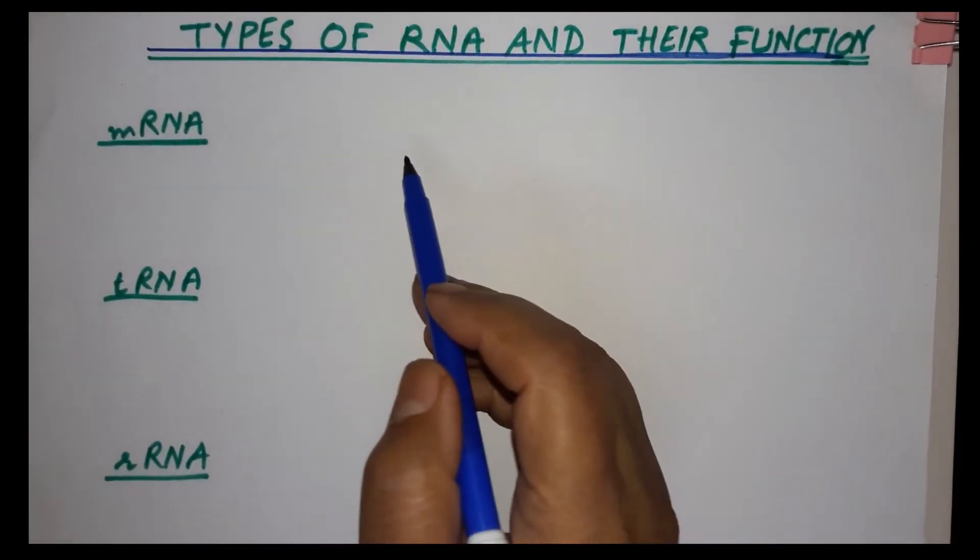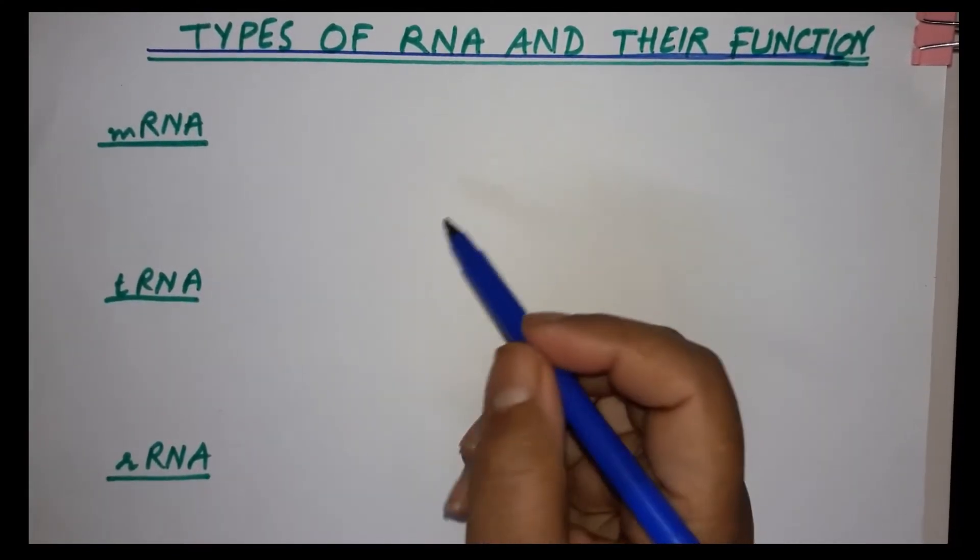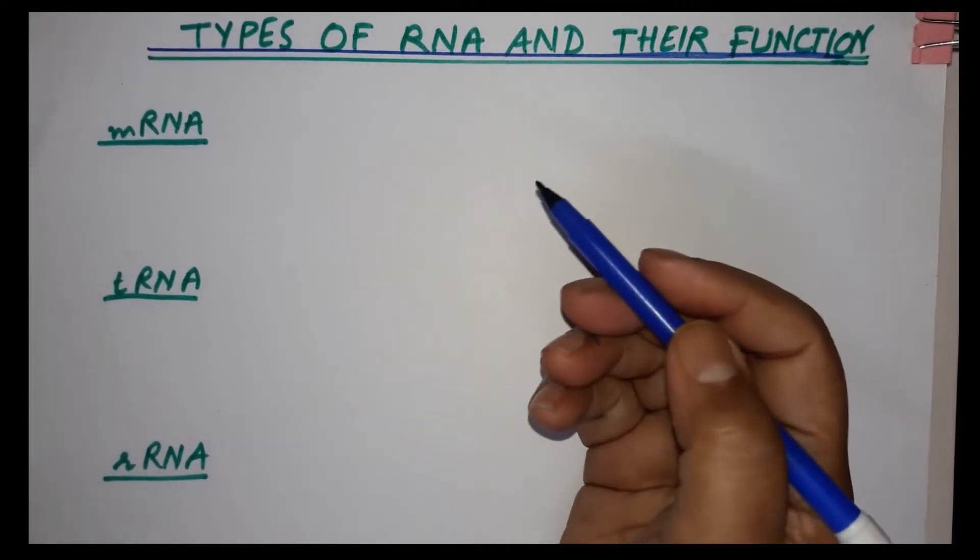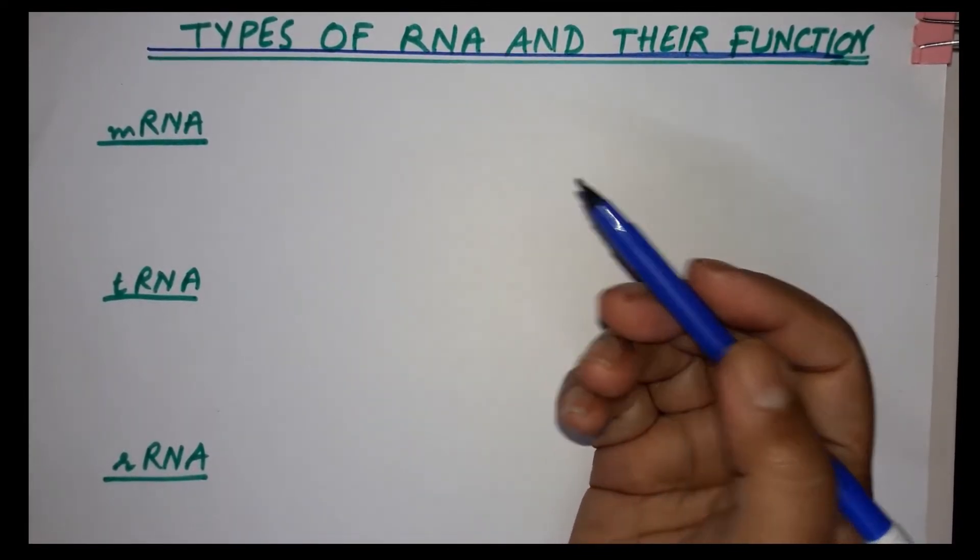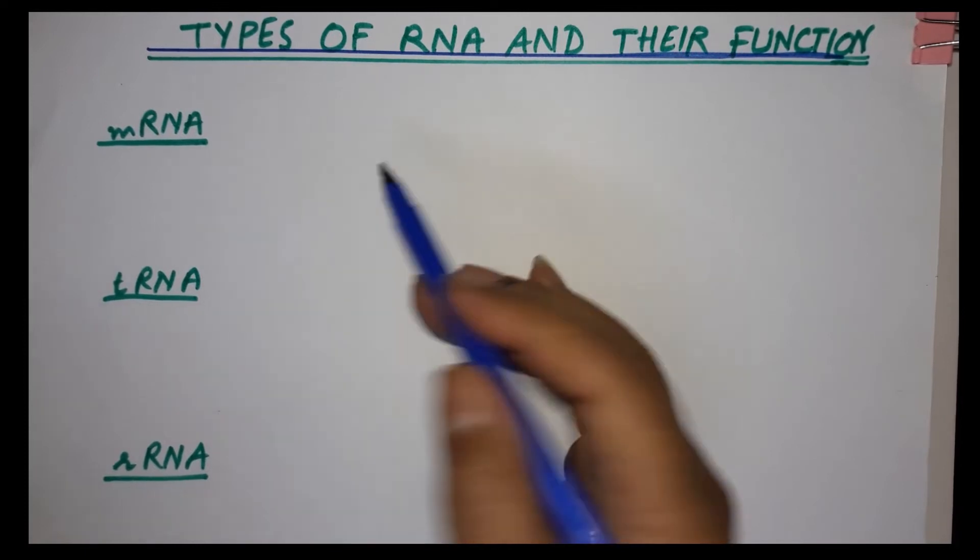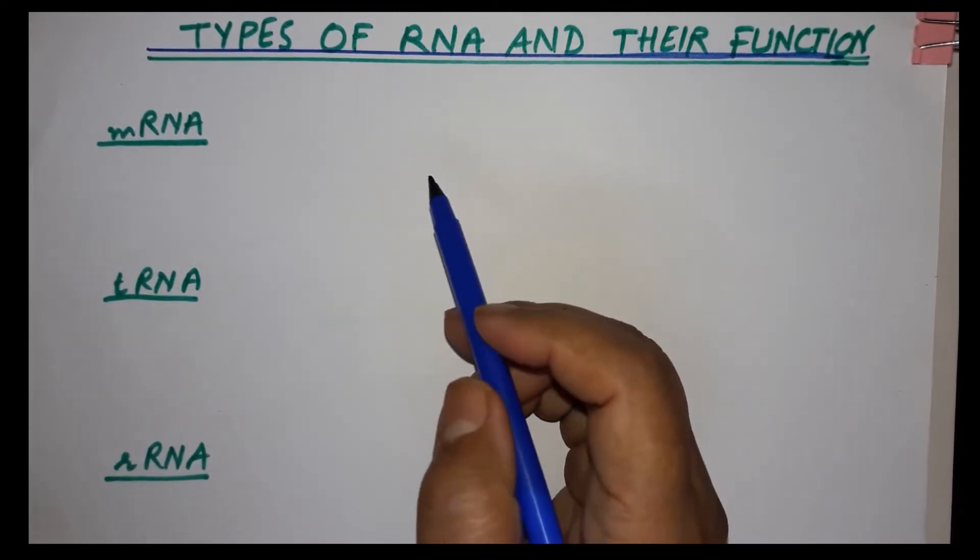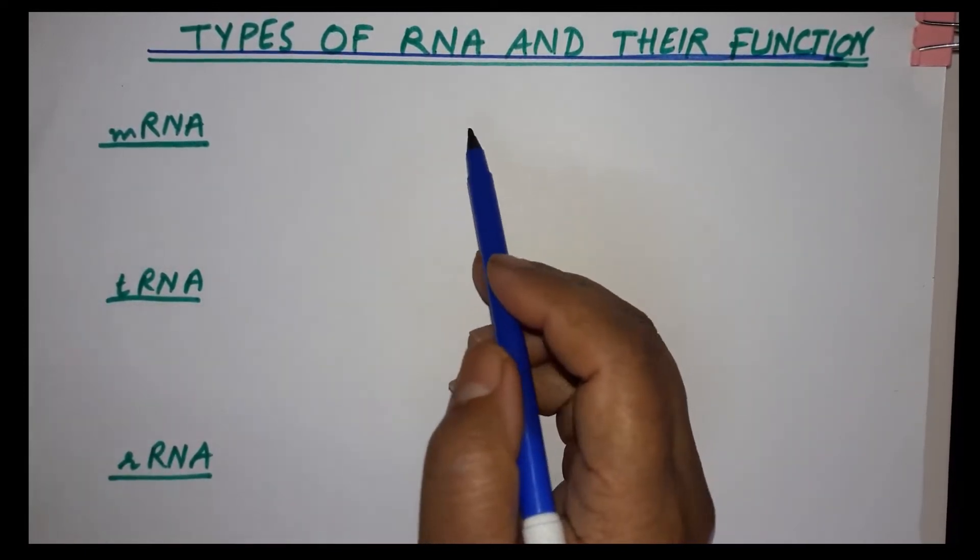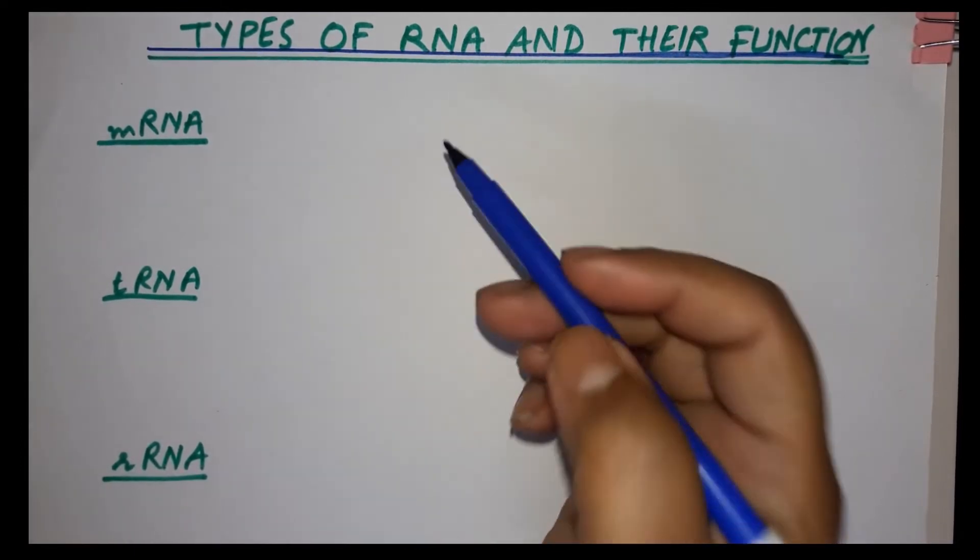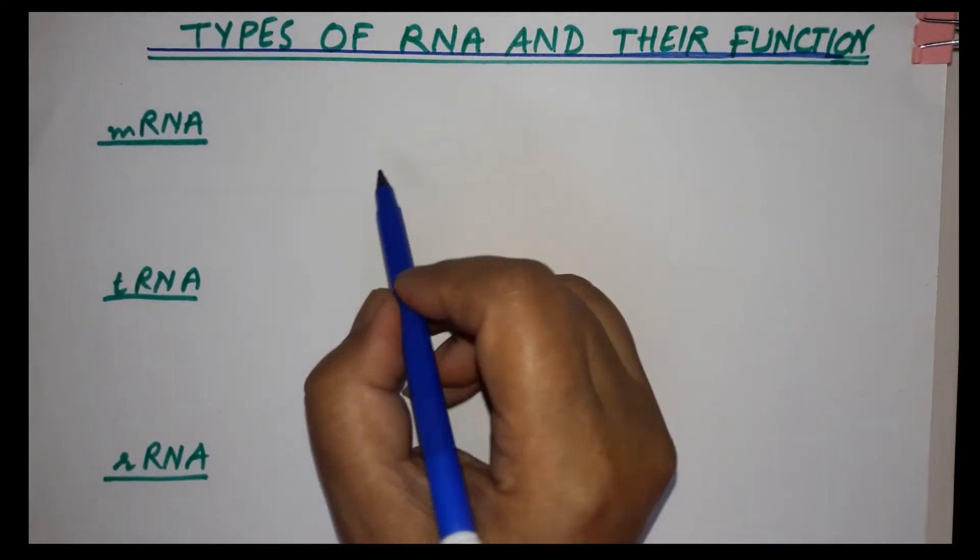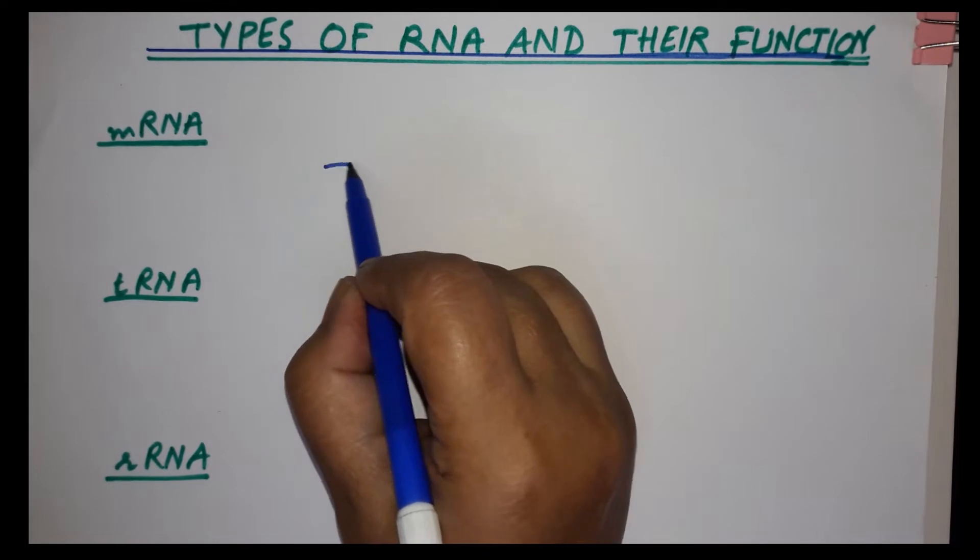So in this video we'll study the types of RNA and their function. DNA passes the information to RNA for translation into proteins. There are three types of RNA: one is messenger RNA.